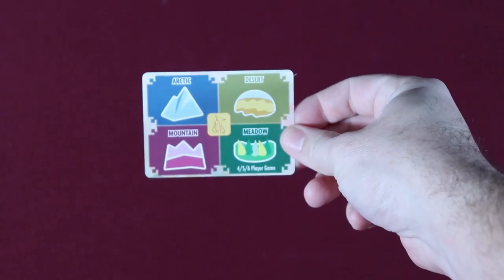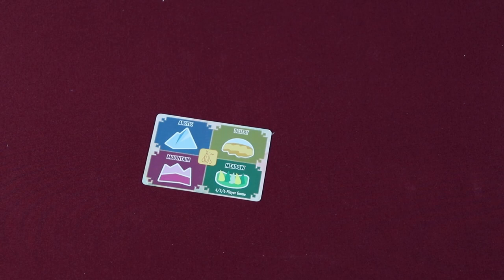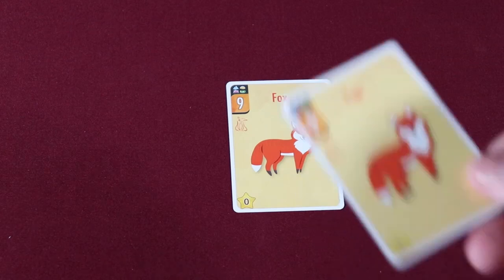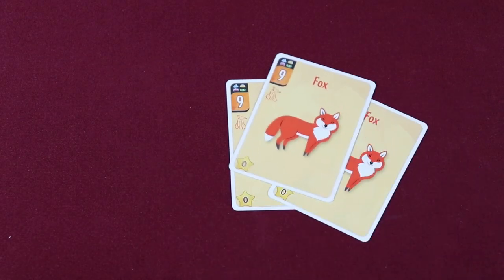Set the terrain card to the 4-6 player side, face up on the table, showing all 4 terrain types. Deal 1 Fox card to all players, and return any extra to the box, removing them from the game.